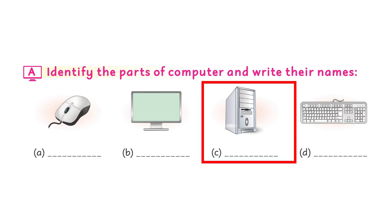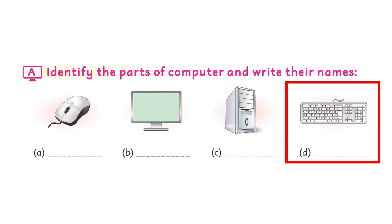This one is system unit. So we will write here part C, S-Y-S-T-E-M system, U-N-I-T unit. The part D is keyboard. This is a picture of keyboard, K-E-Y-B-O-A-R-D keyboard.